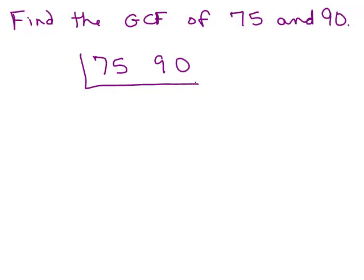Some of you might know the answer and put that number right there. But let's say you're looking at it and just don't know where to get started. Think of the prime numbers: 2, 3, 5, 7, 11, et cetera. Just start with the first prime number and see if it goes into it. When I look at 75 and 90, I see that 5 goes into both — because one ends in 5 and one ends in 0. Any number that ends in a 5 or 0 can be divided by 5. So I'm going to choose 5 and divide. 5 goes into 75 fifteen times, and 5 goes into 90 eighteen times.